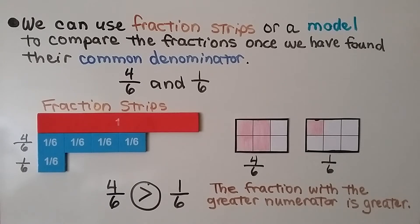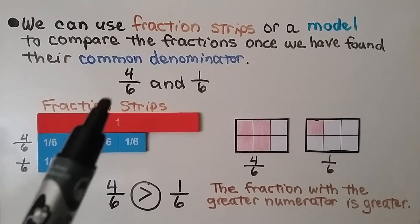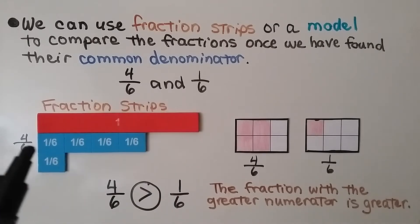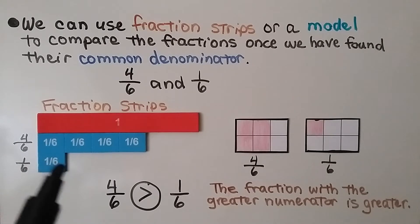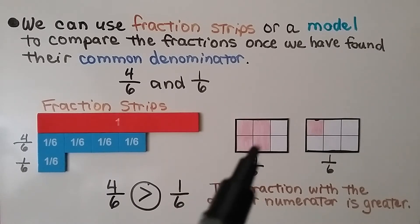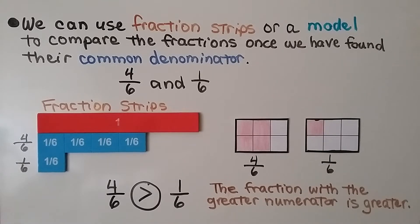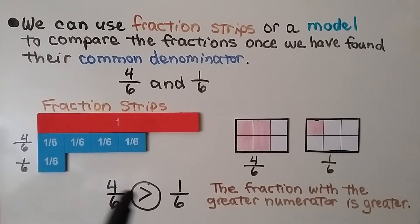We can use fraction strips or a model to compare the fractions once we have found their common denominator. We have one whole and we're comparing four-sixths and one-sixth. Here are four one-sixth parts — that's four-sixths. And here's just one one-sixth part — that's one-sixth. We can also shade in four parts of six to get four-sixths and one part of six to get one-sixth. They have the same denominator, so the fraction with the greater numerator is greater. Four-sixths is greater than one-sixth.